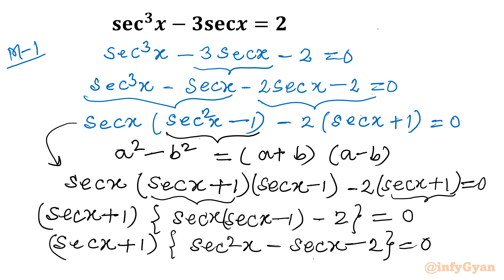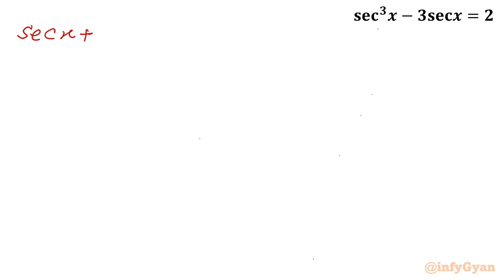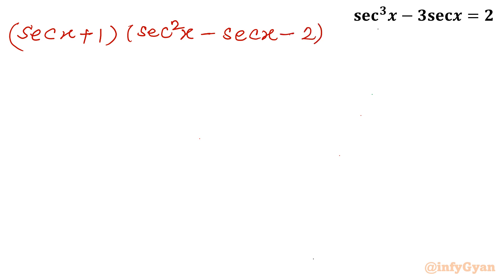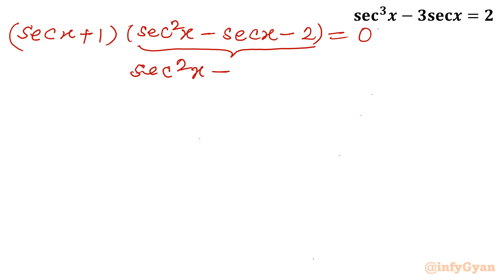So this is a quadratic equation in sec x. We can either apply the quadratic formula or go for factorization again. Let me use factorization. I will split −sec x as +sec x − 2 sec x, giving sec²x + sec x − 2 sec x − 2 = 0.